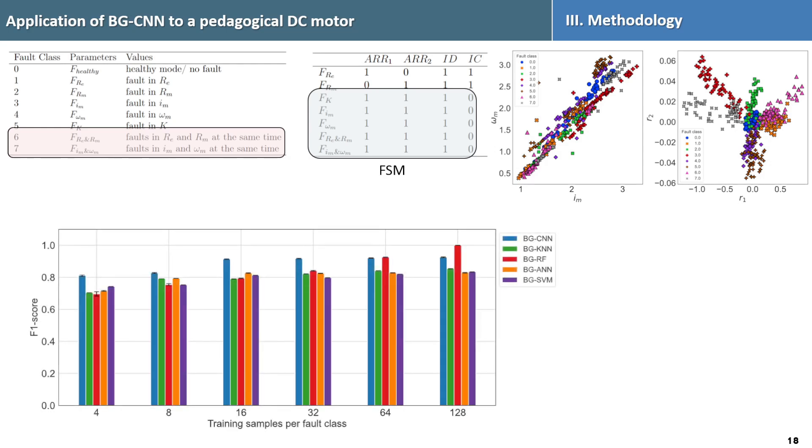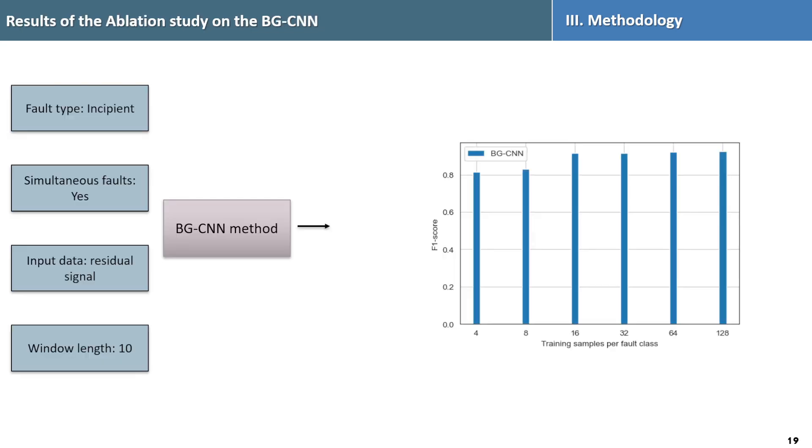We compared convolution neural network with shallow machine learning algorithm, both trained using the residual signal. CNN performed well with few training samples, but as sample exceeded 128 per fault class, random forest model outperformed the CNN. Despite this, we choose CNN for its accuracy when we have only limited amount of label data available.